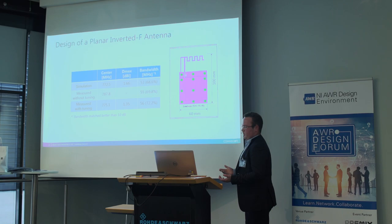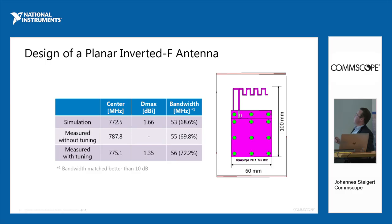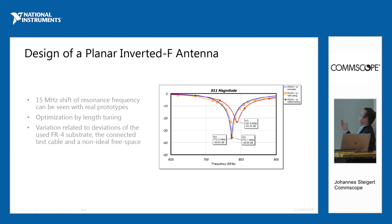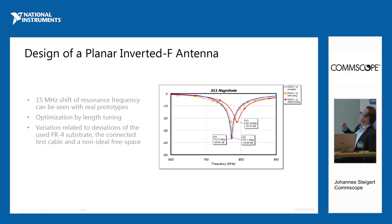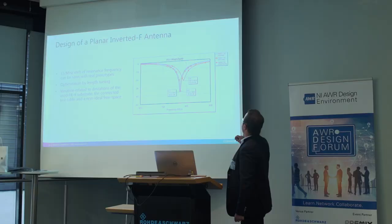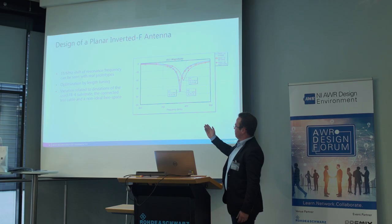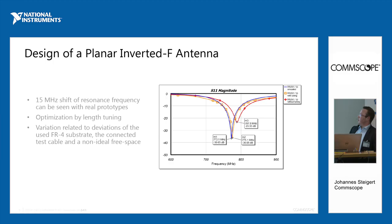The deviations between simulation and real results are shown in this plot. The red trace is the real measurement, the blue trace is the simulated one, and the orange trace is the structure after tuning. The optimization was done by length tuning. The variations are related to deviations of the FR4 substrate used, the non-simulated test cable, and possibly a non-ideal free space environment in the test chamber.